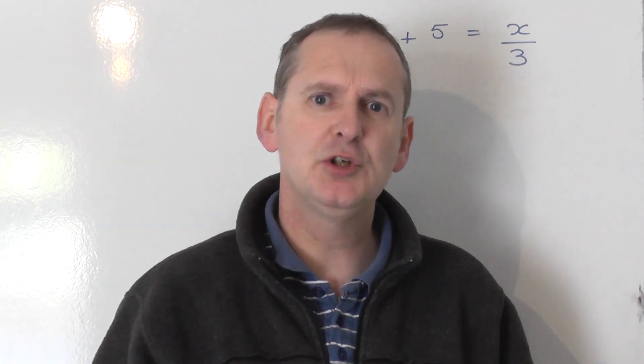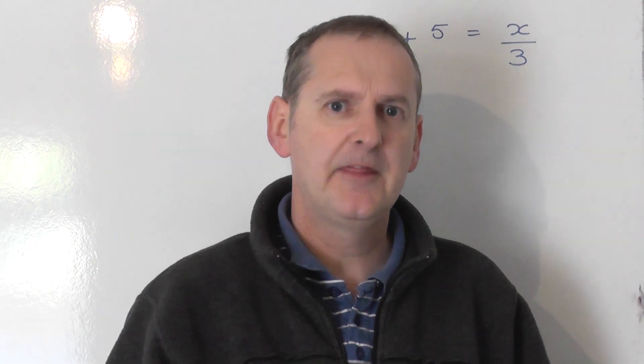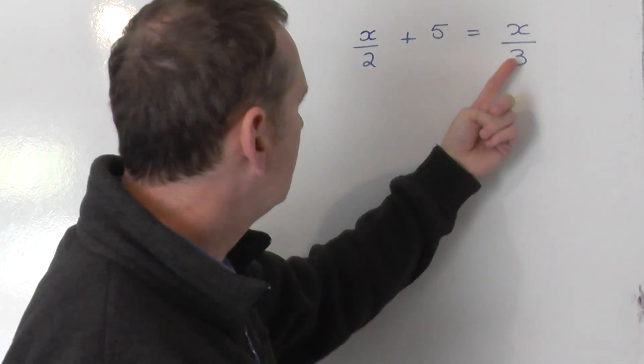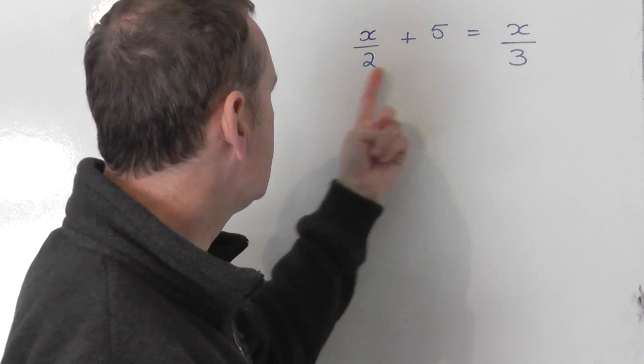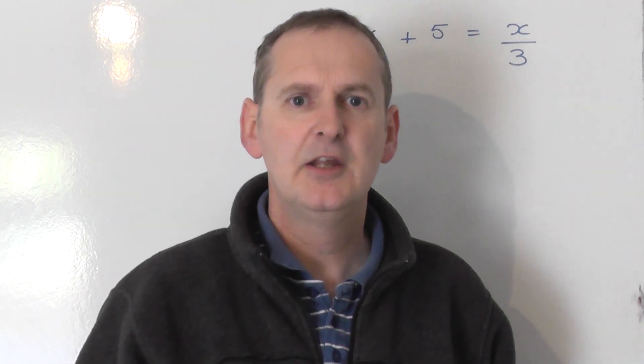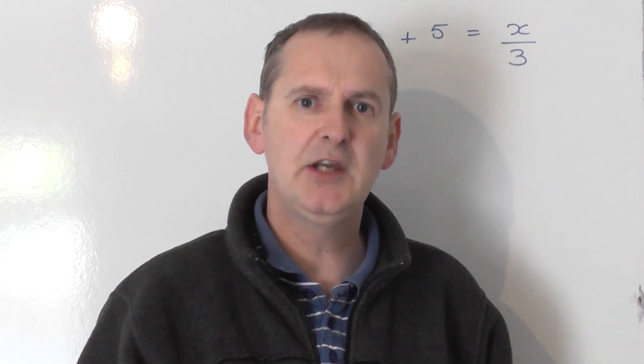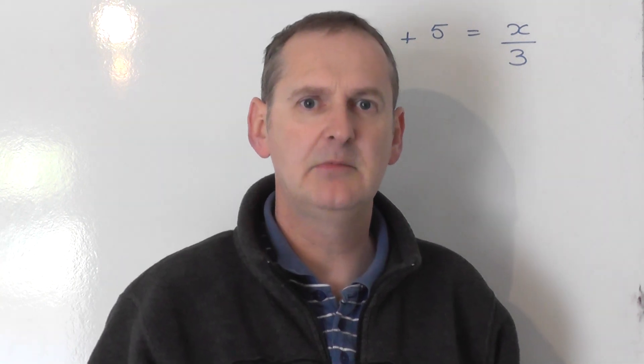I'm going to do this in two basic stages. The first thing I'm going to do is look at these two bottom lines here. And I notice they are different numbers. One's a 2 and one's a 3. The first thing I'm going to do is change them so they're both the same number.